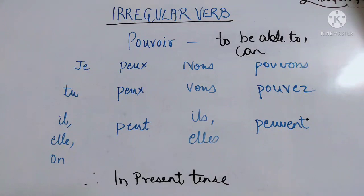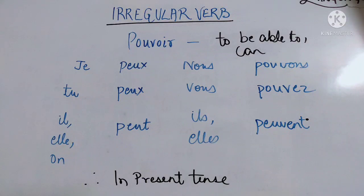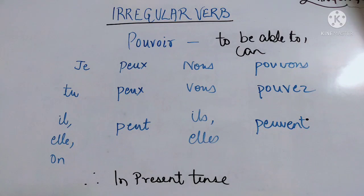'Pouvoir' means 'to be able to' or 'can'. Remove the infinitive part. The stem is P-O-U-V-O. Let's do the conjugation. 'Je peux' means 'I can'. 'Tu peux' — you can. 'Il peut' — he can, or she can, or one can. 'Nous pouvons' — we can.